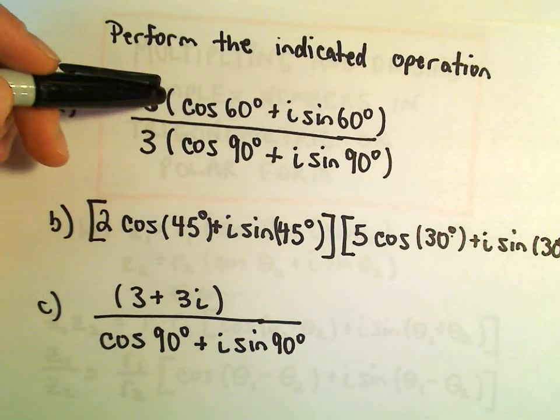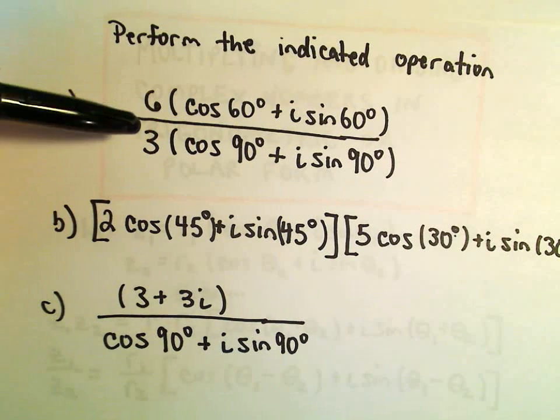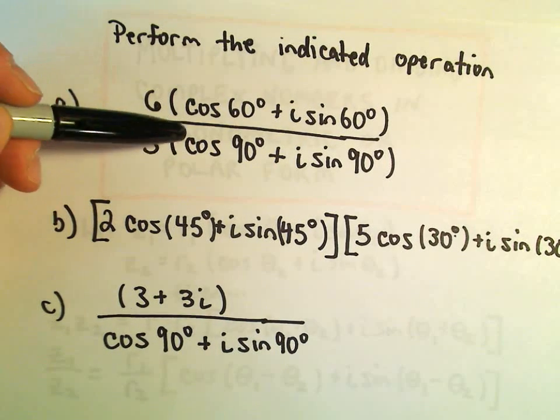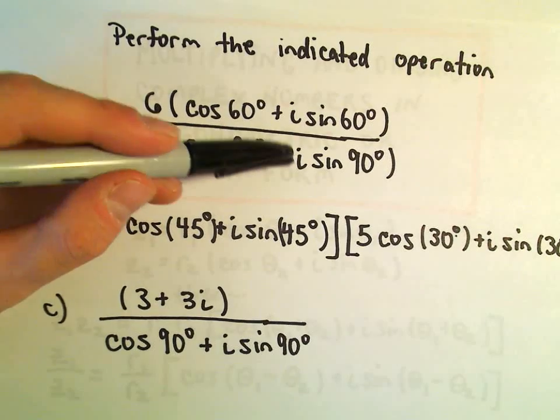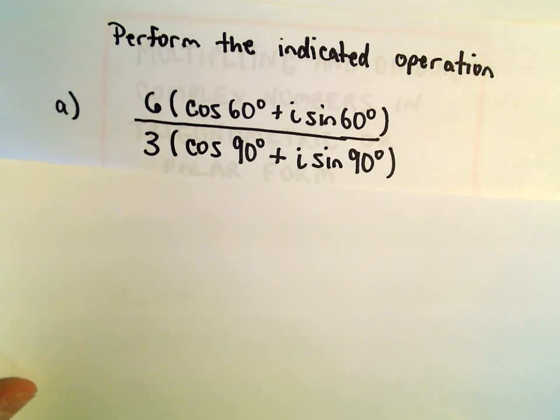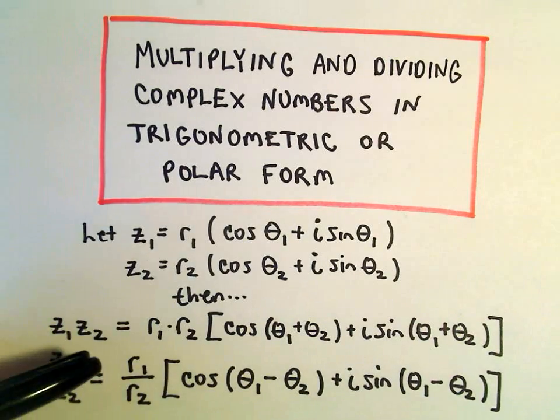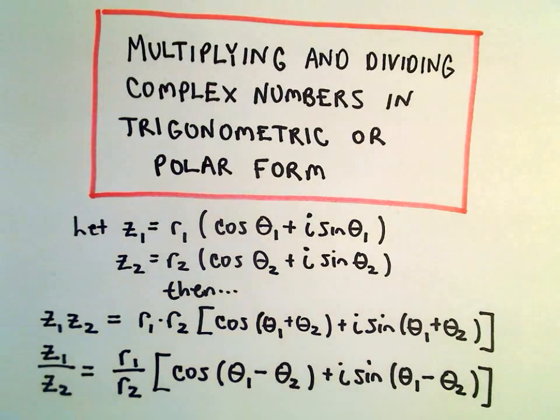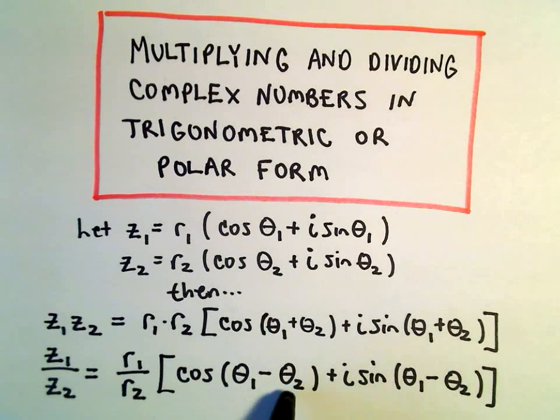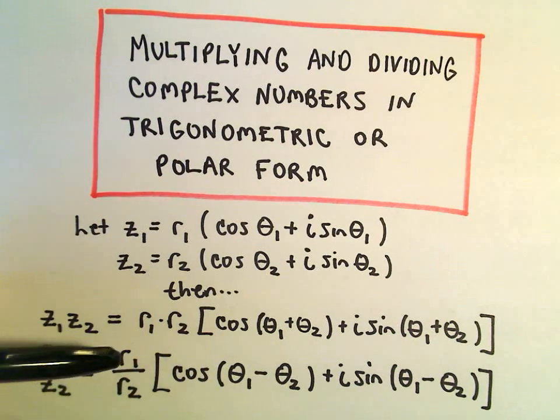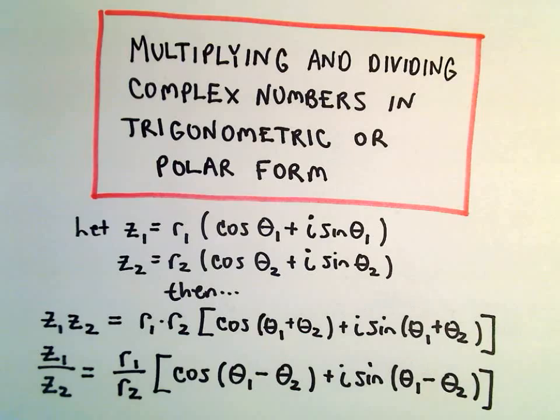So we've got 6 cosine of 60 degrees plus i sine of 60 degrees over 3 times cosine of 90 degrees plus i sine of 90 degrees. So in this case, we're doing division. So it says what we'll simply do is we just take our r1 over our r2, and then it says we simply subtract, we'll take our theta1 minus our theta2.